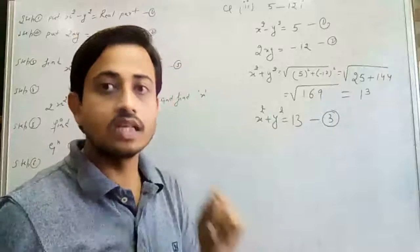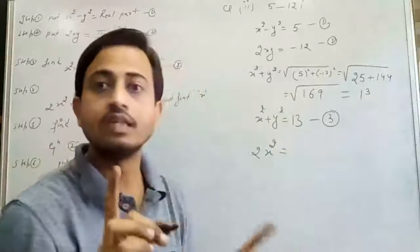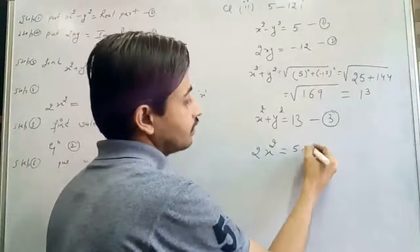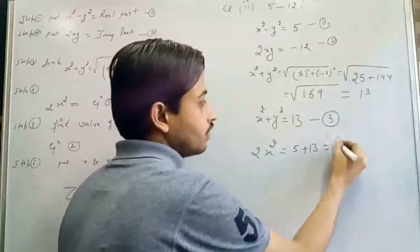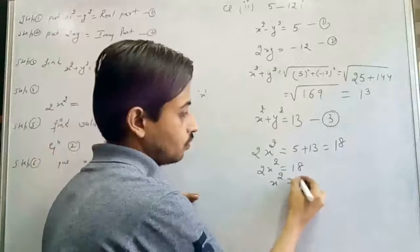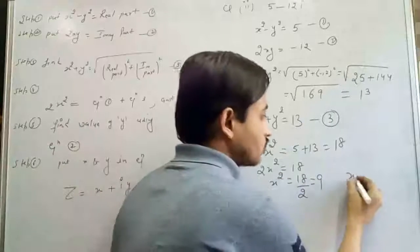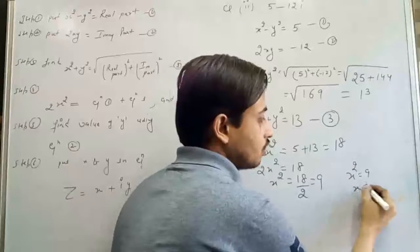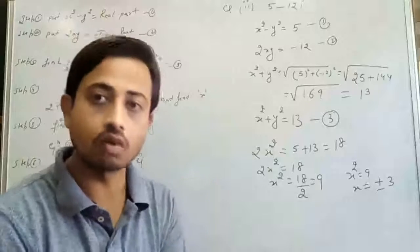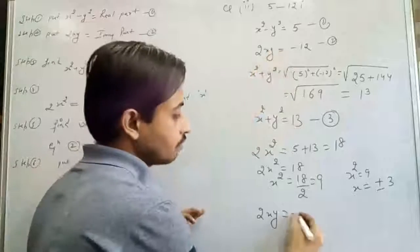Next step: 2X² equals equation 1 plus equation 3, which is 5 plus 13 equals 18. So 2X² equals 18, meaning X² equals 9. Therefore X equals plus or minus 3. Now we use equation 2 — 2XY equals negative 12 — to find Y.